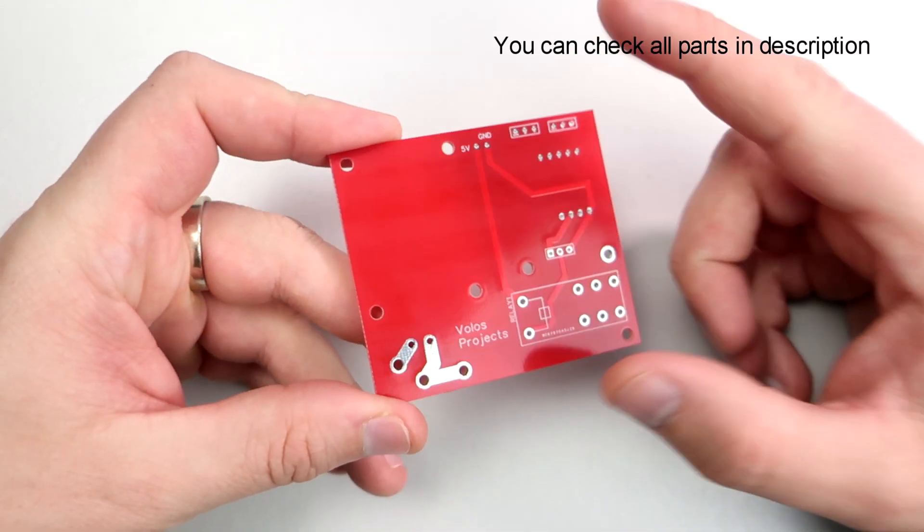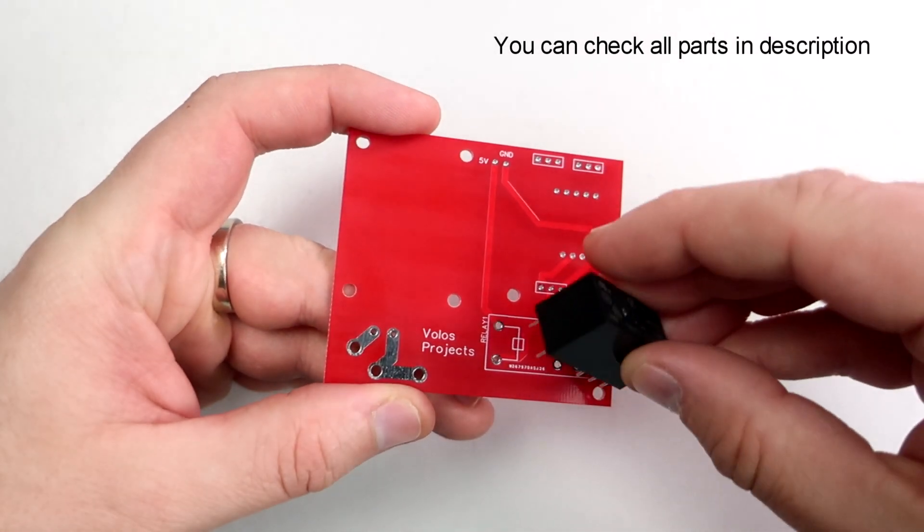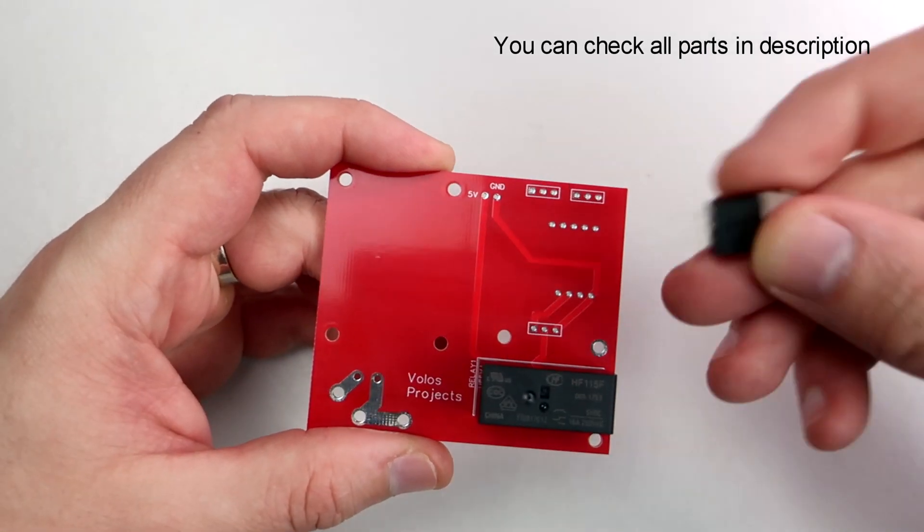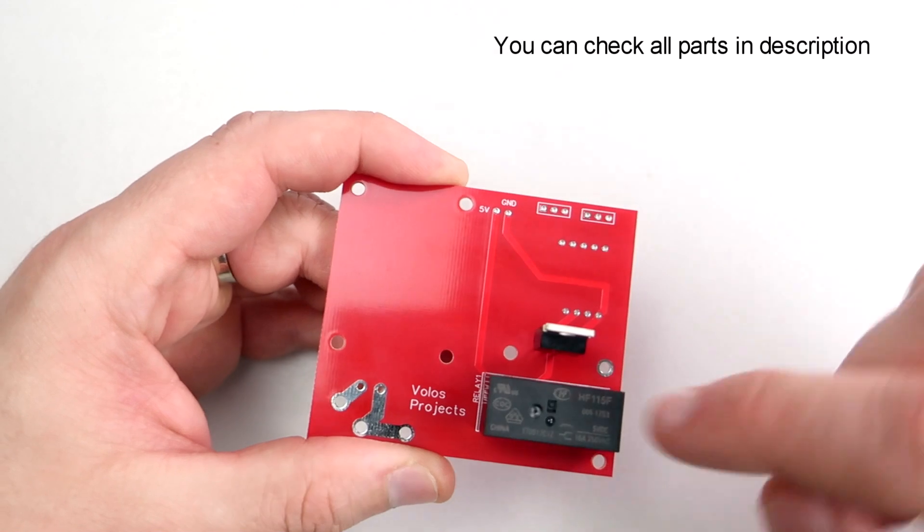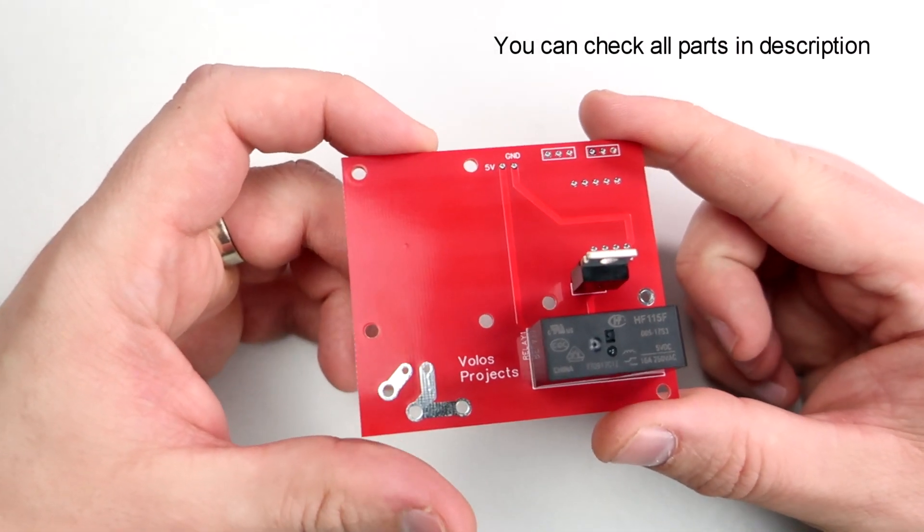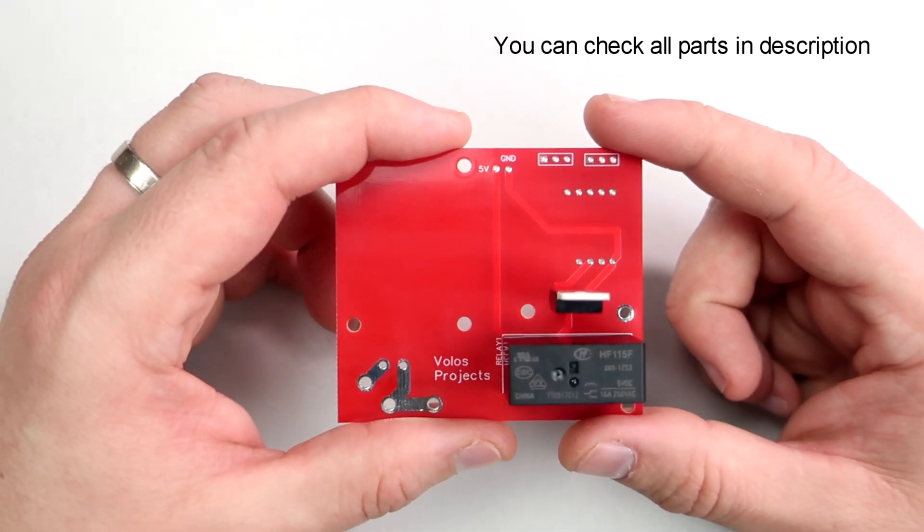So let's see all the parts. Here is the place for the relay. Here is the place for this MOSFET, because I can't connect the microcontroller directly to the relay. The current that is needed to turn on a relay will damage or destroy the microcontroller or ESP32.